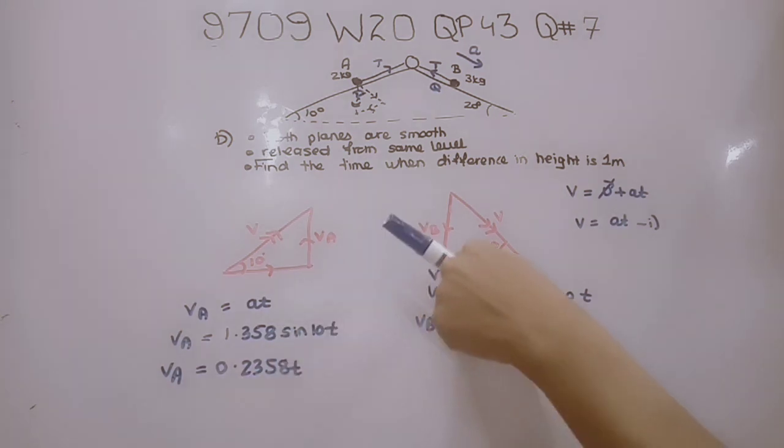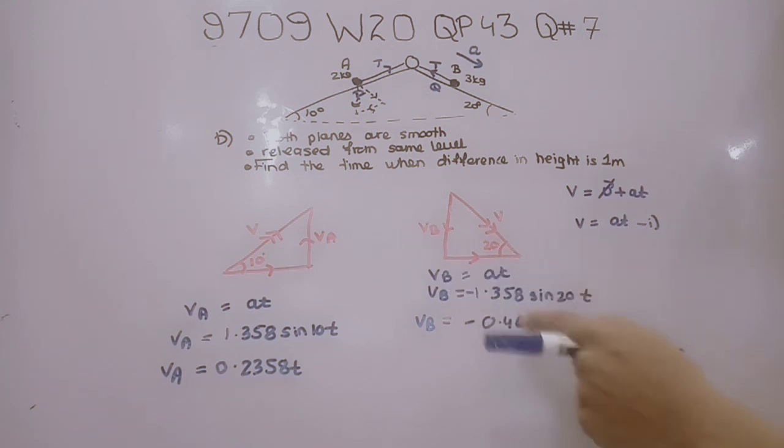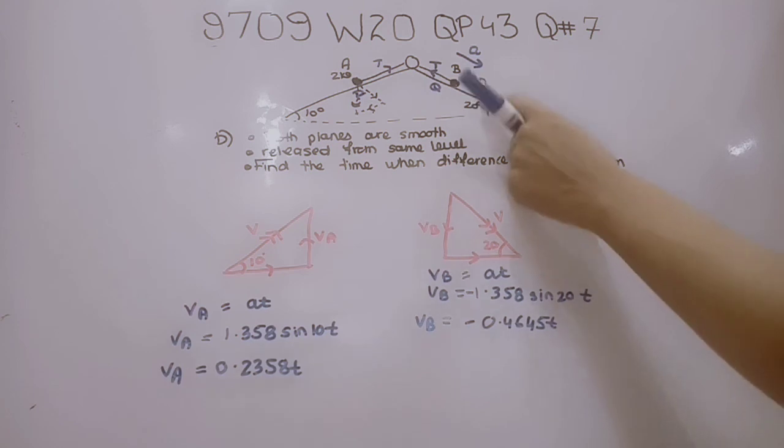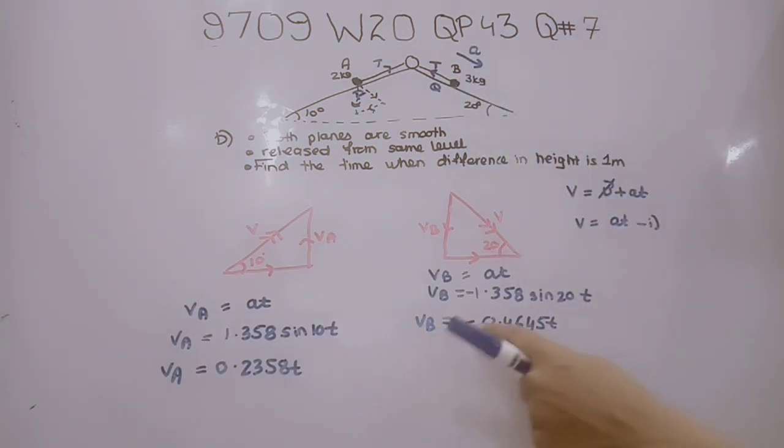Similarly for VB, the direction is downward so we use a negative sign. VB equals negative 1.358 sine 20 times T, which gives VB equals negative 0.4645T.